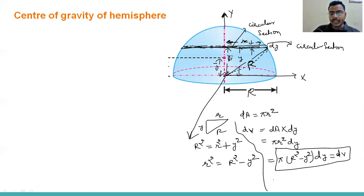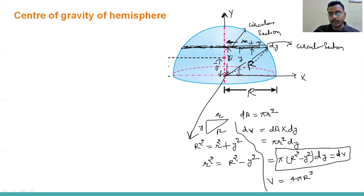Now, the total volume of the sphere is 4πR³/3. Since this is a hemisphere — half of the sphere — the volume is half of that, which gives us V equals πR³/3. So now we have V and we have dV.